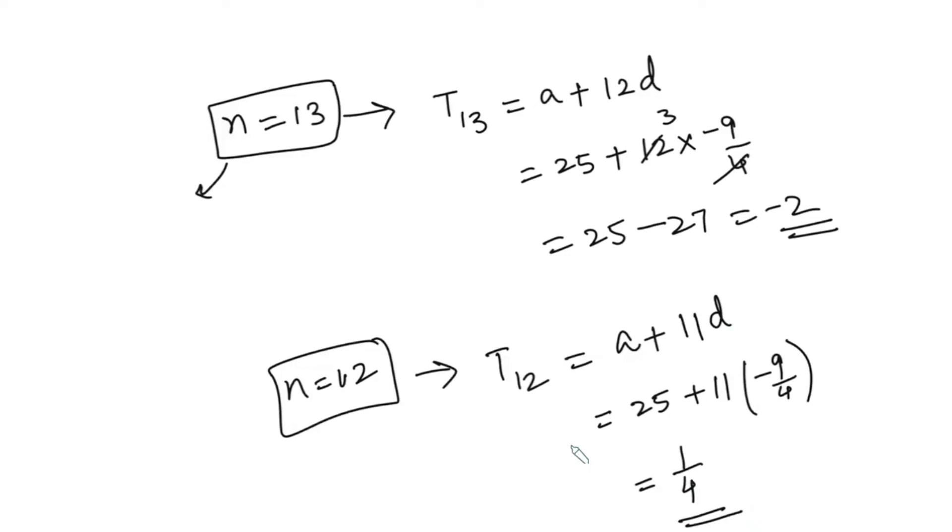That is the numerically smallest term. So, in this question, we have learnt two things. One, how to find the first negative term in a decreasing sequence. Two, how to find the numerically smallest term in an AP.